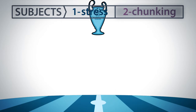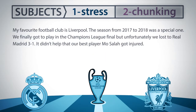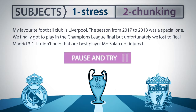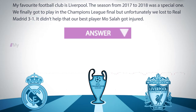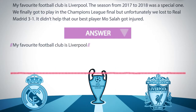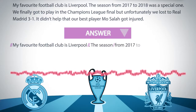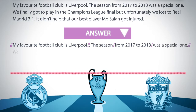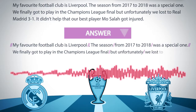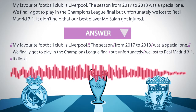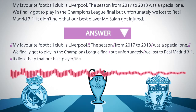Have a look at the following example. I'm going to say it out loud to you, but first pause the video, read it, and guess where you think the shorter and longer pauses should go. Ready? Here is the answer. 'My favourite football club is Liverpool. The season from 2017 to 2018 was a special one. We finally got to play in the Champions League final but unfortunately we lost to Real Madrid 3-1. It didn't help that our best player Mo Salah got injured.'